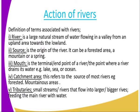Next, what is the source? A source is the origin of the river — where it originates from, where this natural stream is coming from. It can be a forested area, a mountain, or a spring. Rivers can come from forested areas, from mountains when ice melts, or from a spring.